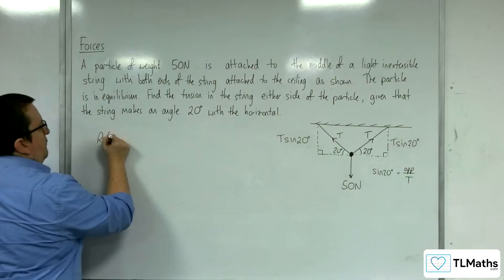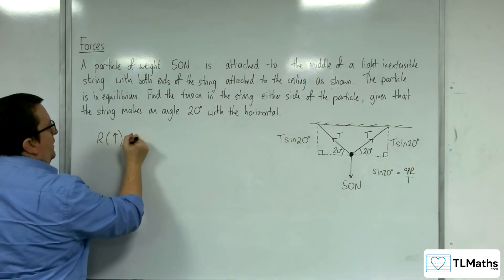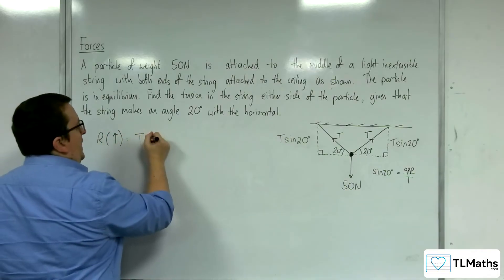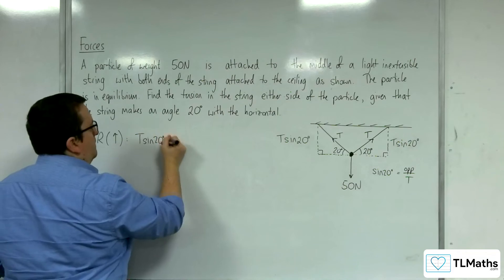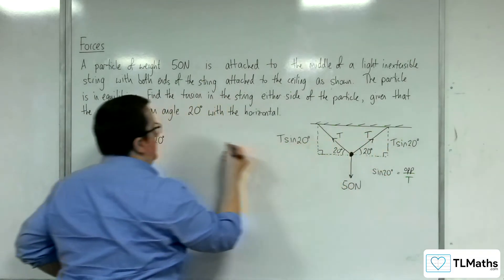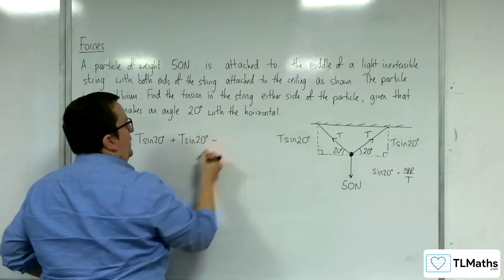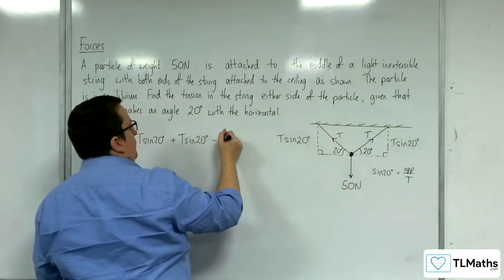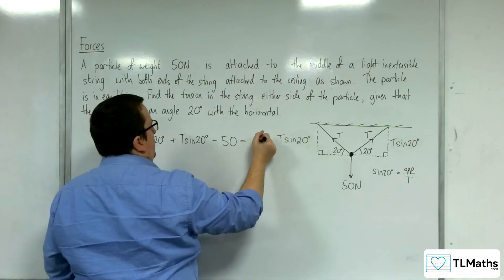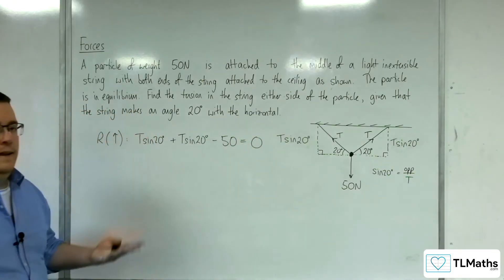If I resolve my forces taking upwards as positive, I've got T sine 20 plus T sine 20. They're the two forces going upwards. Take away the force going downwards, which is 50 newtons. And that's going to be equal to 0 because we are in equilibrium.